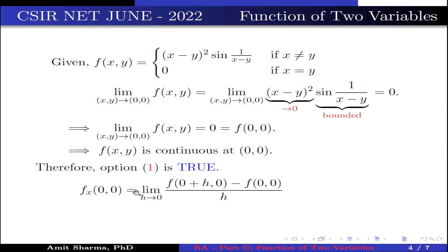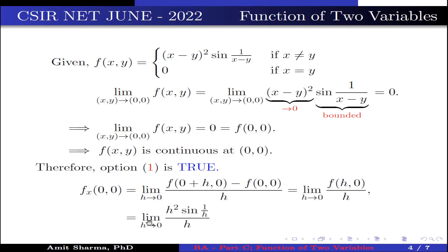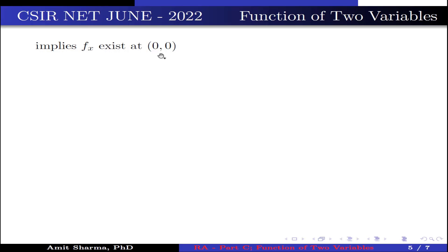fₓ at (0,0) equals the limit as h → 0 of [f(h,0) − f(0,0)] / h. Substituting x = h and y = 0, we get the limit as h → 0 of h²·sin(1/h) / h = h·sin(1/h). Since h → 0 and sin is bounded, this limit is 0. Therefore fₓ exists at (0,0), and option 2 is false.